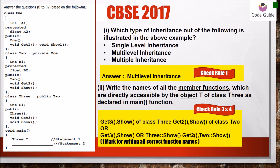Now for previous year questions — from CBSE 2017 Delhi question paper. The first question asks which type of inheritance is shown. Applying rule number one, this is multi-level inheritance because class 2 derives from class 1, and class 3 derives from class 2. Second, write the names of all member functions directly accessible from object T. Rules 3 and 4 apply: we check the public section of class 3, which gives get3 and show, plus get2 and show derived from the parent class. One mark is awarded only if all correct function names are written.